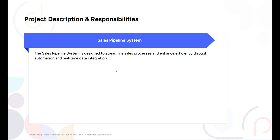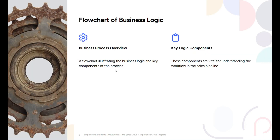Project Descriptions and Responsibilities: The sales pipeline system is designed for a streamlined sales process to enhance efficiency through automation and real-time data integration. You will also get to know the flowchart of your business logic, that is business process overview and the key logic components used in the sales pipeline.